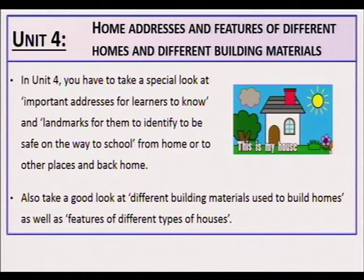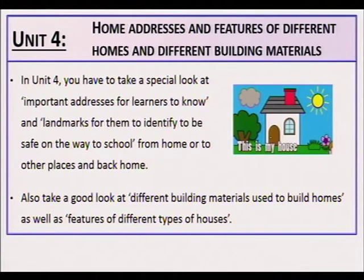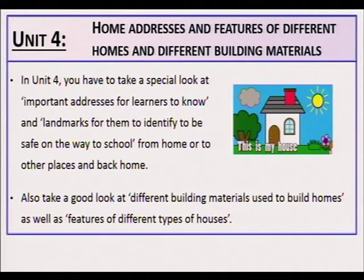The features of positive family relationships and the maintenance of such positive relationships are important. Unit 4: Home addresses and features of different homes and different building materials. You have to take a special look at important addresses for learners to know, and landmarks for them to identify to be safe on the way to school or from home to other places and back. Also take a good look at different building materials used to build homes, as well as features of different types of houses.